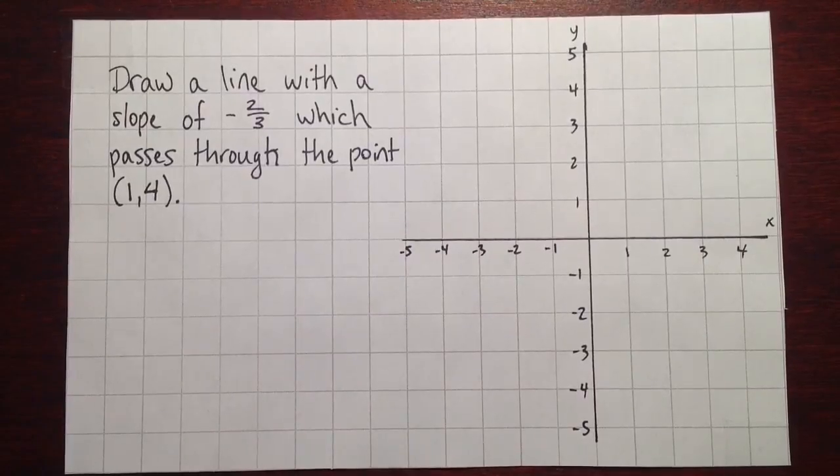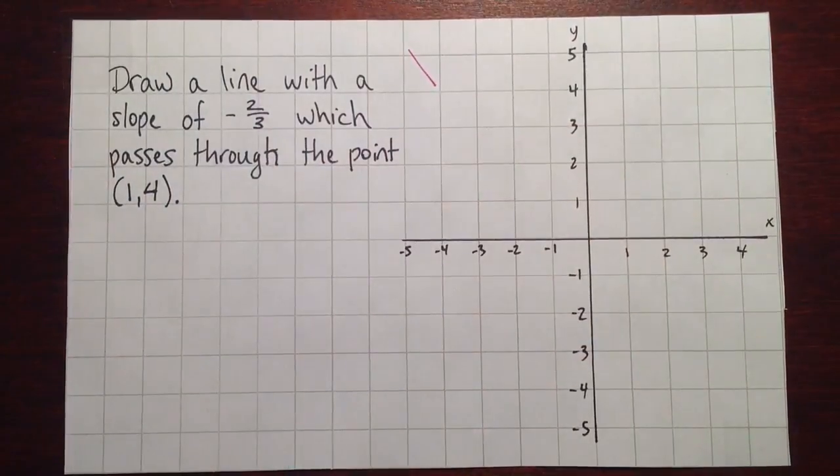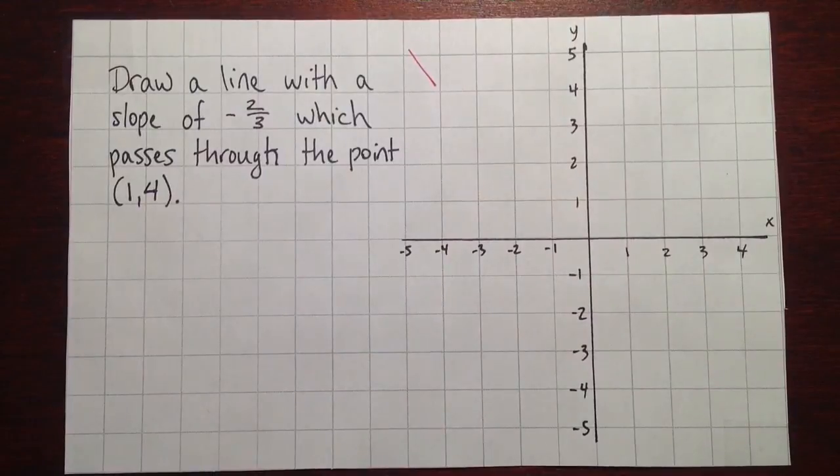So before we start, we can make a note. Again, a negative slope would be kind of like this. It should go in that direction, up as it goes left.